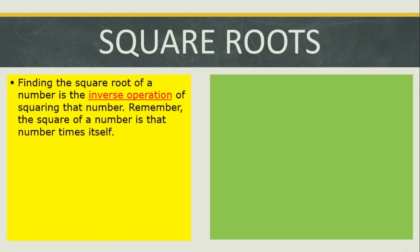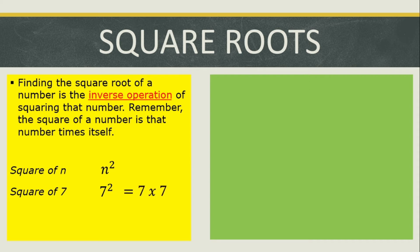Finding the square root of a number is the inverse operation of squaring that number. Remember, the square of a number is that number times itself. So if we have the square of n, that is simply n raised to 2 or n squared. If we have the square of 7, that is 7 squared or 7 raised to 2. If we expand 7 raised to 2, that is simply 7 times 7, and we know that 7 times 7 is equal to 49. Therefore, 7 squared is equal to 49.